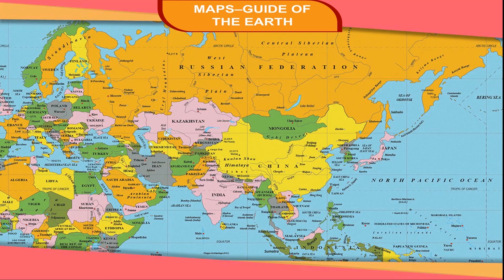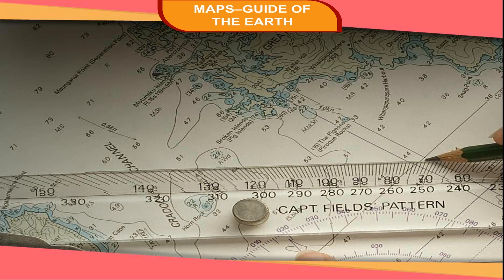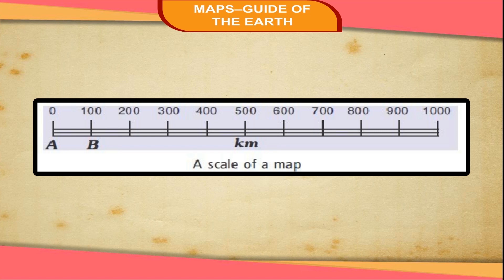Can we show the actual size of the Earth on a map? It is not possible. It is not possible even to show the actual distance between two places on a map. Thus, maps are drawn according to a scale which represents actual distances on the map. For example, the actual distance between two places is 100 kilometers, so on the map, 100 kilometers may be represented by 1 centimeter or any small scale. See the scale shown here. The distance between A and B represents 100 kilometers. You can find the scale of a map usually at the bottom or a corner of the map.